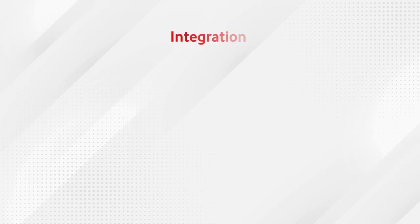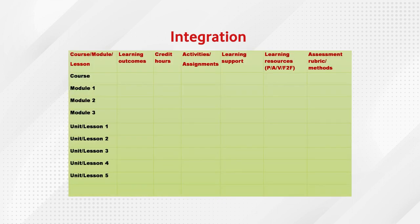Here is an example matrix you can see on screen. We can use any matrix, but what is important is that there must be a mapping of courses, modules, and units; their learning outcomes; the credit hours; activities and assignments associated with that course or module; learning support provided; learning resources — print, audio, video, and face-to-face interaction; and the assessment rubric. Once we are clear about this matrix, it will be easy to bring in multidisciplinary, interdisciplinary, skilling, and employability with multiple entry and exit options.